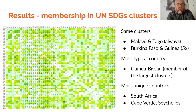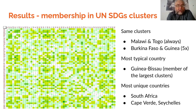If we compare membership of particular countries in clusters constructed by particular SDGs, we have a membership matrix which summarizes the information about countries. There are two characteristic couples of very similar countries: Malawi and Togo — they are always in the same clusters, even though they are quite distant. And Burkina Faso and Guinea — they are five times in the same cluster. Guinea-Bissau seems to be the most typical African country, as it is a member of the largest clusters for each UN SDG. And South Africa, Cape Verde, or Seychelles seem to be the most unique or specific countries.